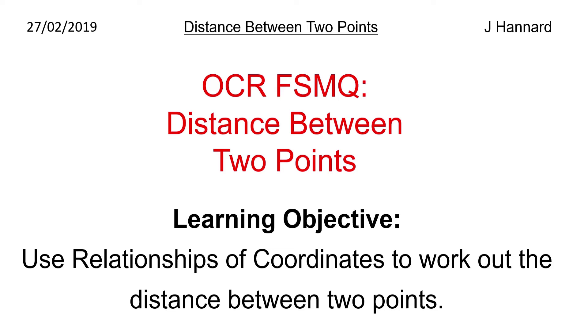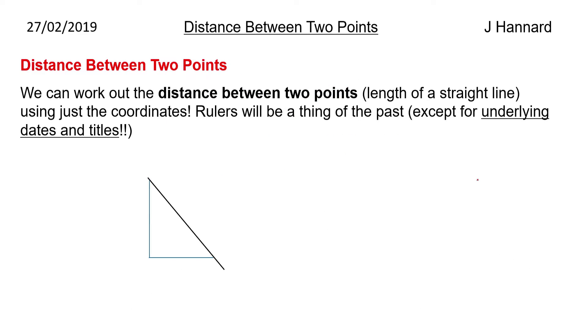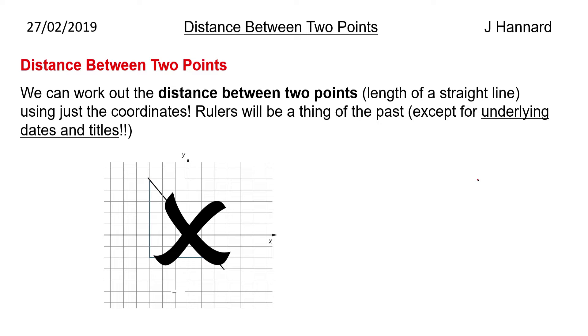First thing, we work out the distance between two points or the length of the straight line using just the coordinates. Rulers will be a thing of the past once you know this method, except for underlined dates and titles of course. We won't be drawing on grids or anything like that, we'll just be using maths which is fantastic. All we need are the two coordinates that we know the section of the line goes through.